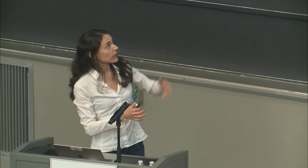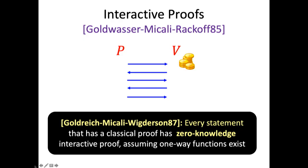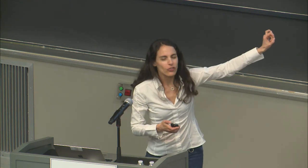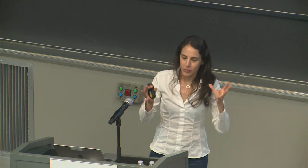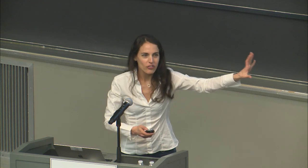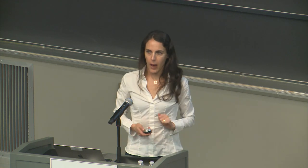What was shown shortly after this idea was introduced is that actually every statement that has an efficient interactive proof can be converted to a zero knowledge one. There's a way of very efficiently taking a proof and making it zero knowledge. A caveat is this assumes one-way functions — a minimal cryptographic primitive, like hash functions for those who aren't familiar — but under a very mild cryptographic assumption, this is possible.